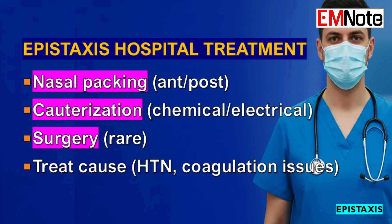There are two main options for cauterization. Chemical cautery — usually with silver nitrate sticks — is quick and works well for small, visible vessels. The clinical pearl is to only cauterize one side of the septum at a time; if you do both sides in the same spot, you risk septal perforation. The other option is electrical cautery, for larger anterior vessels or if silver nitrate doesn't work. If you can't see a single source or the bleeding is more diffuse, we move to nasal packing — for anterior bleeds, something absorbable like Surgicel or non-absorbable like a Merocel sponge or a Rapid Rhino balloon.